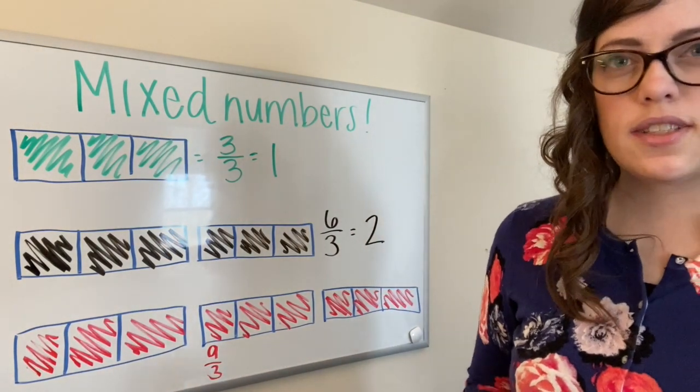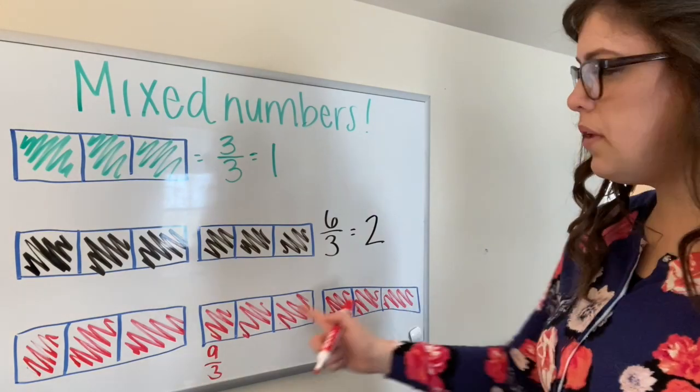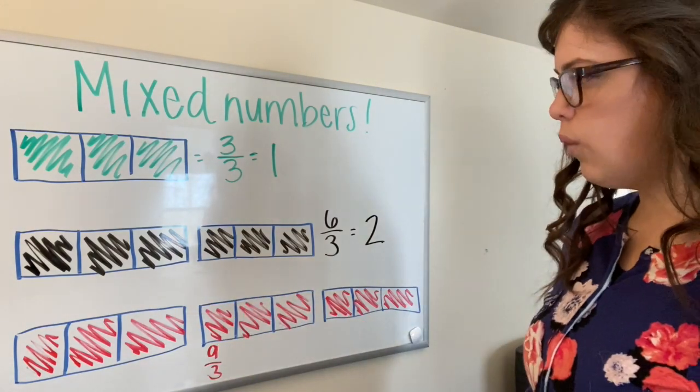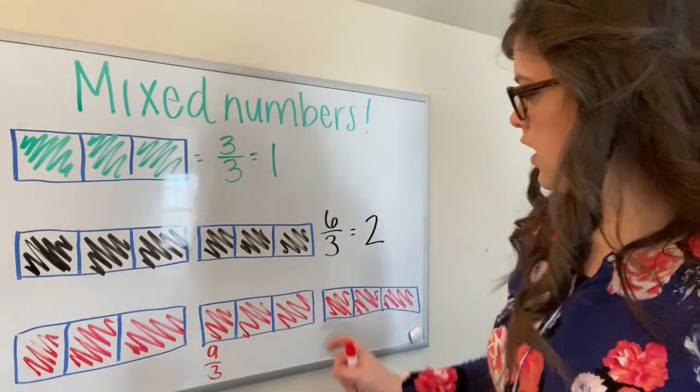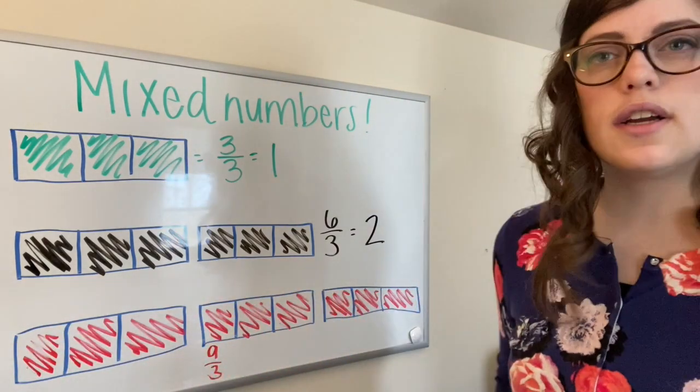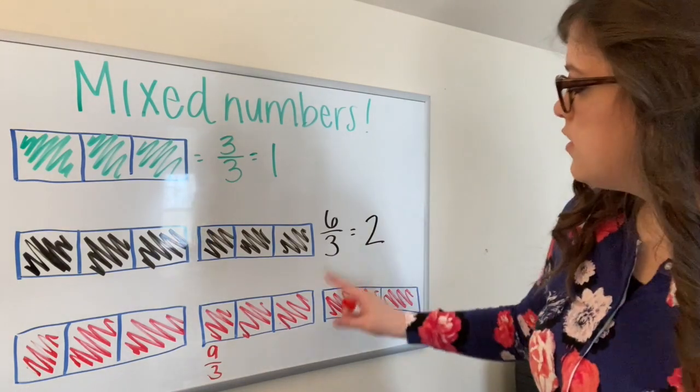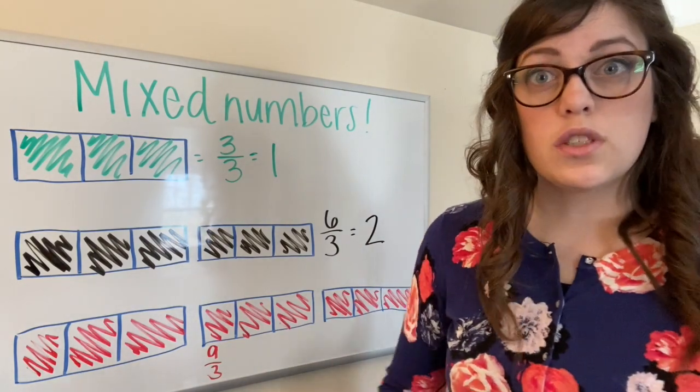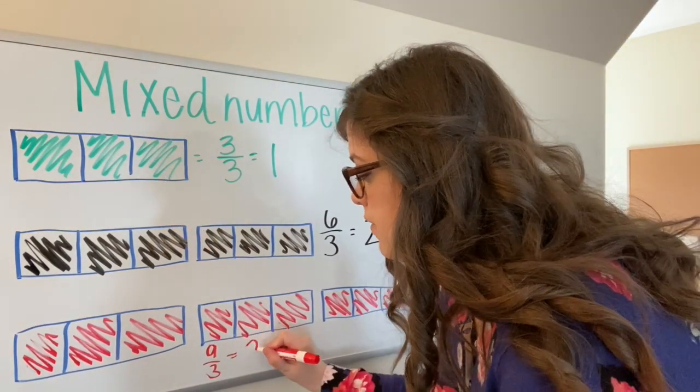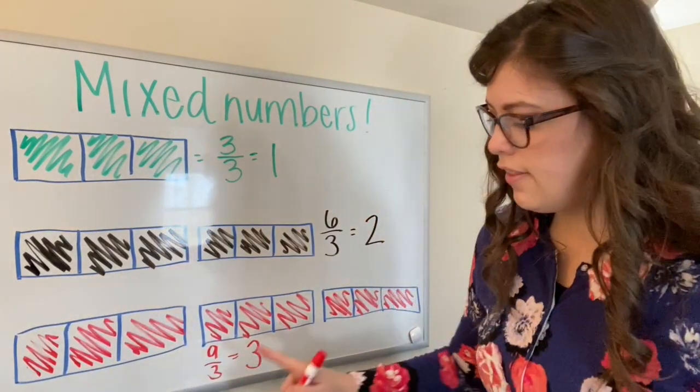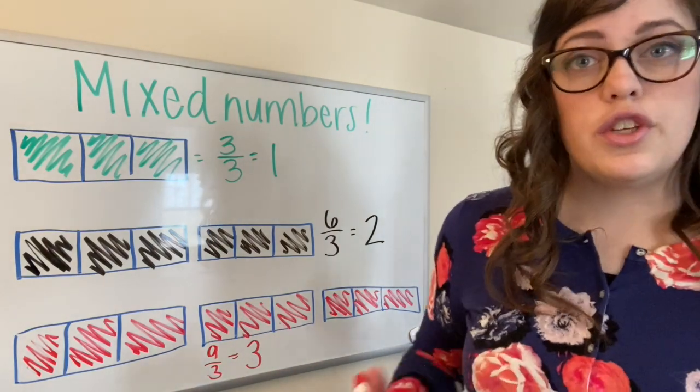What do you think that's going to be equal to? How many wholes do I have? Well, these three thirds are equal to one. These three thirds are equal to one. And these three thirds are equal to one. So if I have one plus one plus one, that's going to give me three. Nine thirds is equal to three.